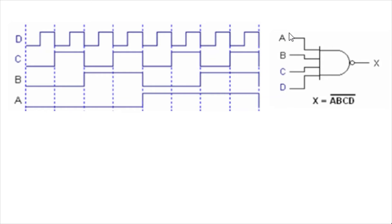So if any one of inputs a, b, c, or d is zero, x will be one because a·b·c·d becomes zero and the bar of zero equals one. But when a, b, c, d are all one, you get one, and the bar of it becomes zero.